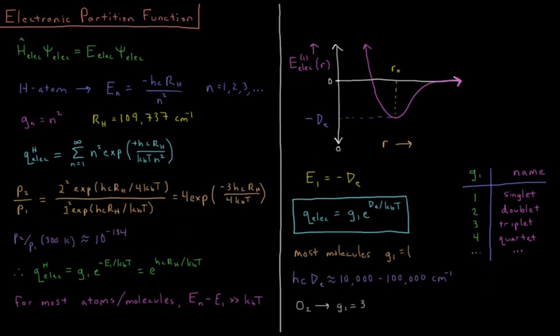This video will discuss the electronic partition function of atoms and molecules. For atoms and molecules, to get the electronic energy levels, we have to solve the electronic Schrödinger equation. That's all in quantum mechanics, that's not the focus of this playlist. We just care what are the energy levels that result.